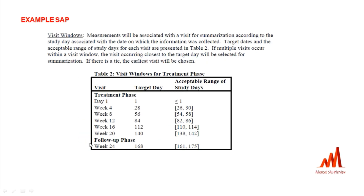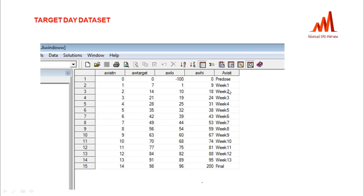The variables include AWTARGET, AWTDIFF, low value, high value, and units. The statistician specifies in the SAP document whether they want to analyze data week-wise, month-wise, year-wise, or day-wise. For example, this SAP specifies analysis starting day one with four-week gaps. They provide the target days and acceptable range — how many days before or after are acceptable — so we create the visit windowing dataset accordingly.